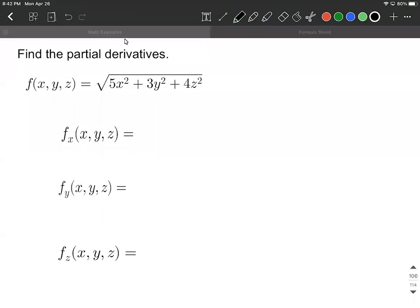Okay, let's find partial derivatives. This time we have a square root and we have three separate variables: x, y, and z. We're going to calculate each one of these partial derivatives.